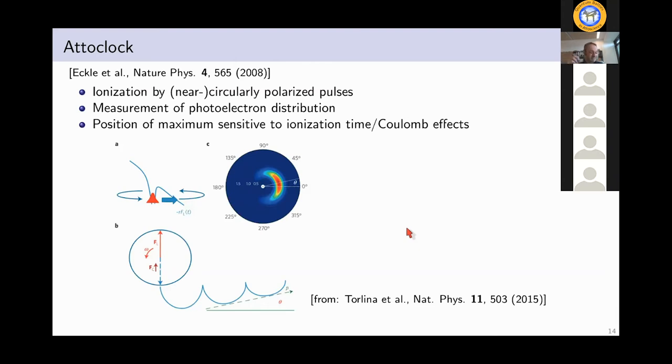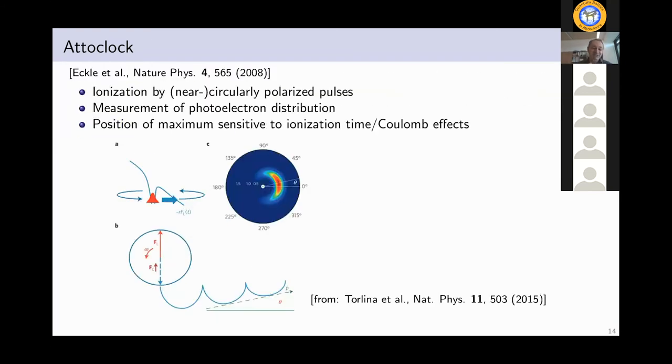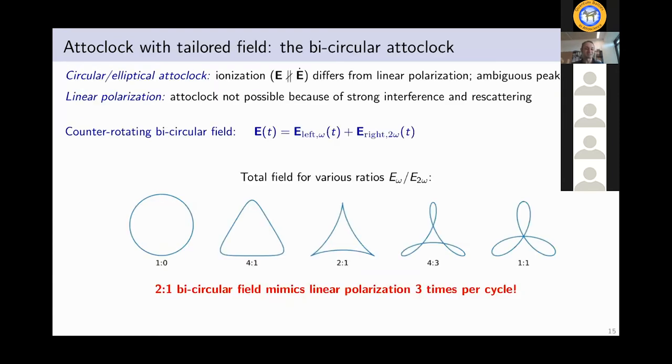So putting this the other way, it means that if you look at a fixed momentum, then for this given momentum, the ionization time is changed by the Coulomb potential. It's not the same as in a short range potential. So in the same way, we would expect that to happen for the harmonic generation. So the question is, can we use something like the attoclock principle to learn something about the ionization time in high harmonic generation? And that's, of course, difficult because the setting is different. We have circular polarization in one case, linear polarization in the other case.